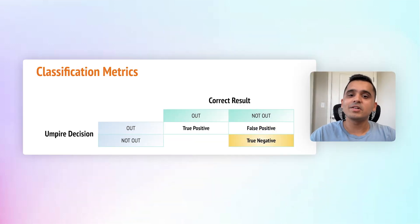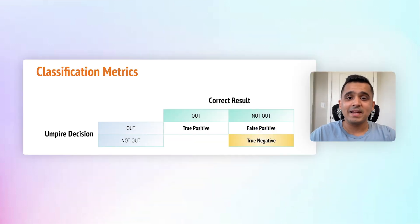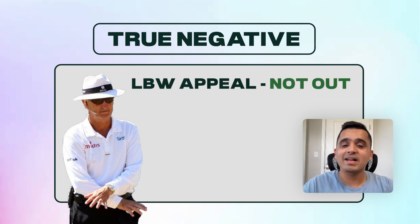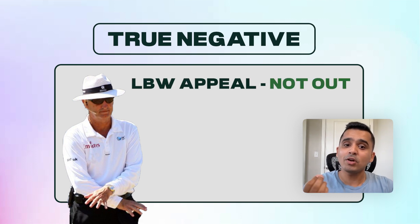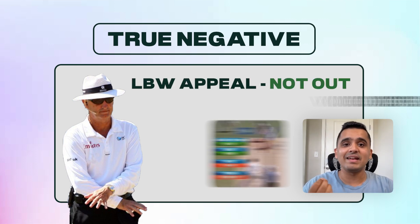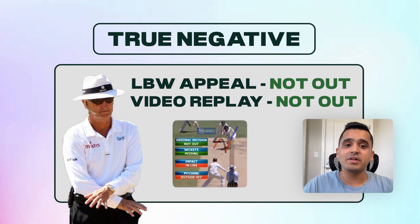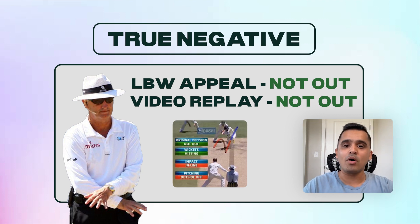Next is the true negative. That's when your model, the umpire, correctly judges a player to be not out, and indeed they are not out — that is, the DRS video replay also shows that the ball is missing the stumps.